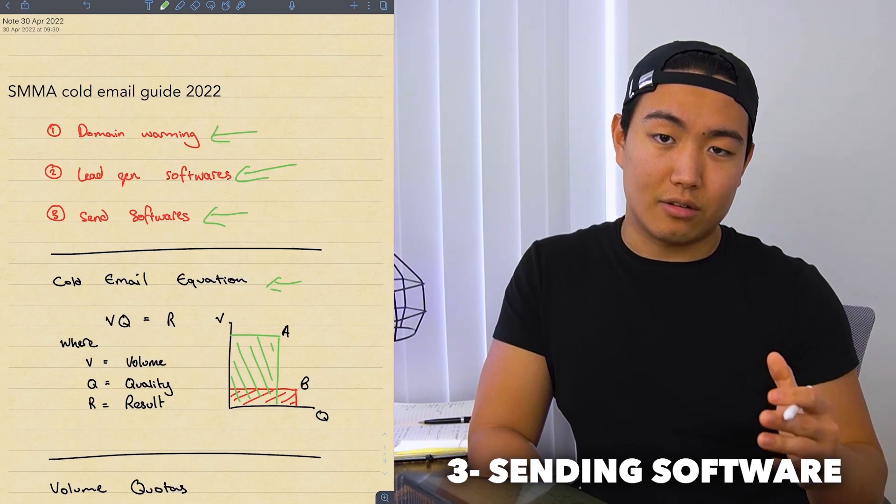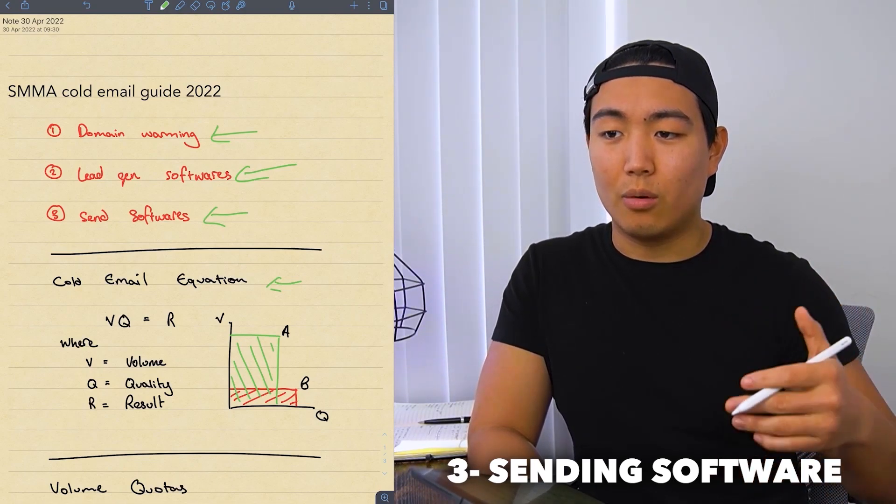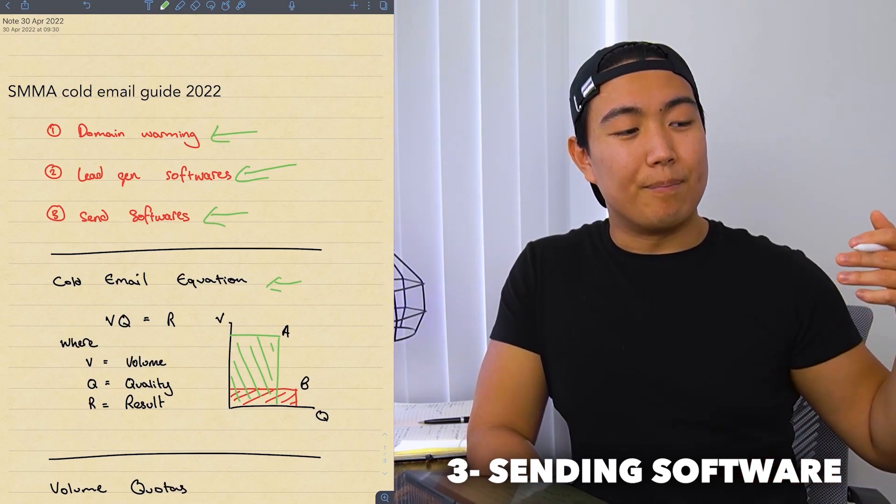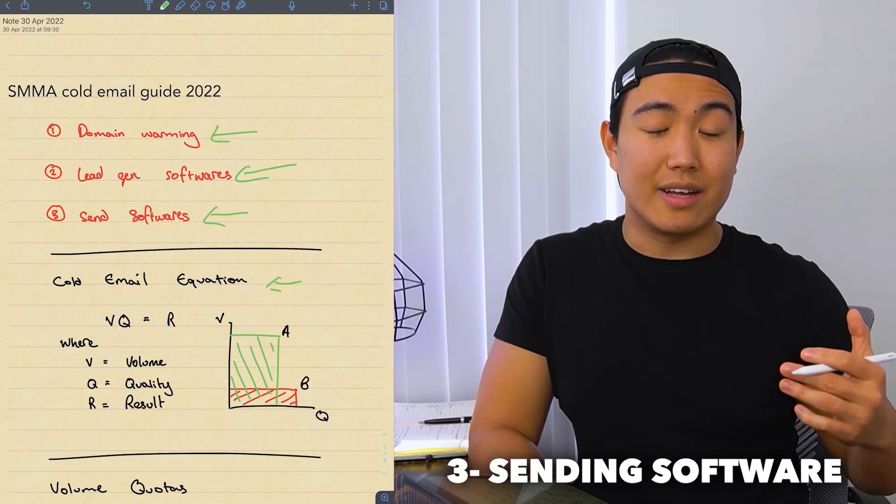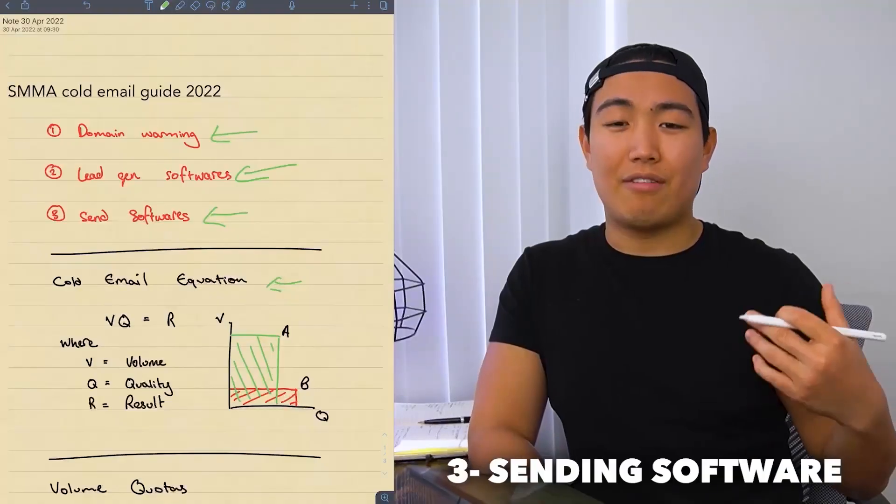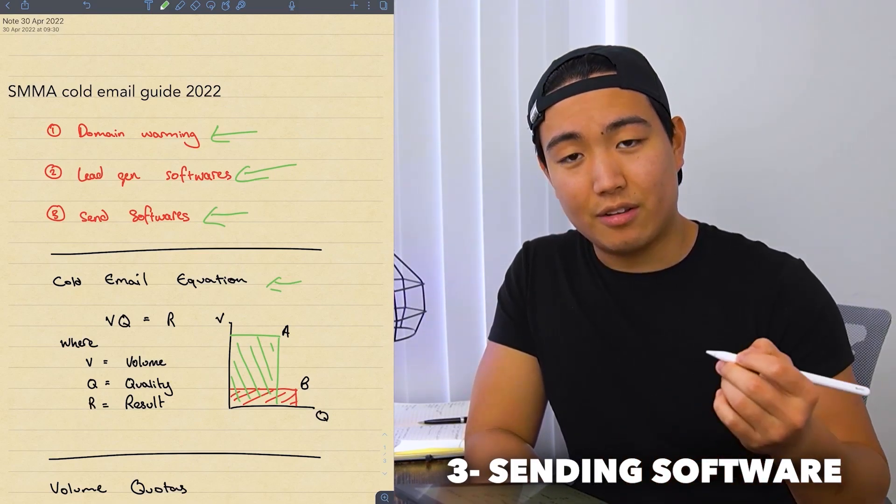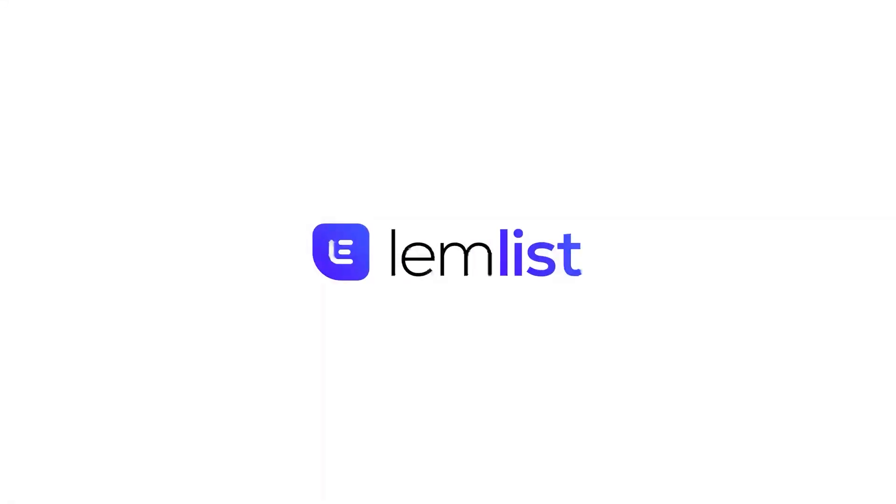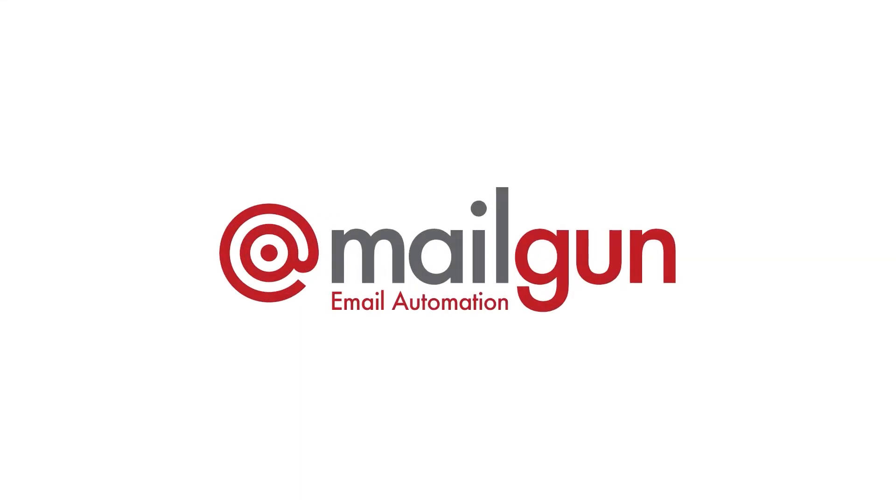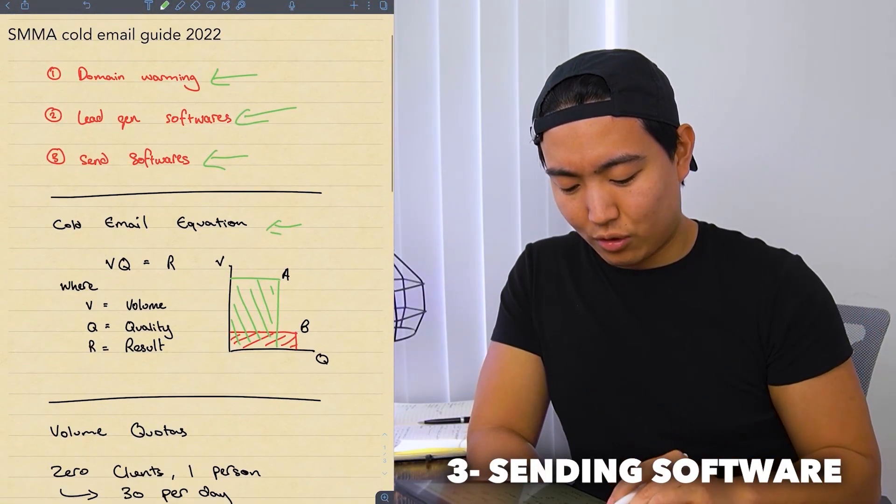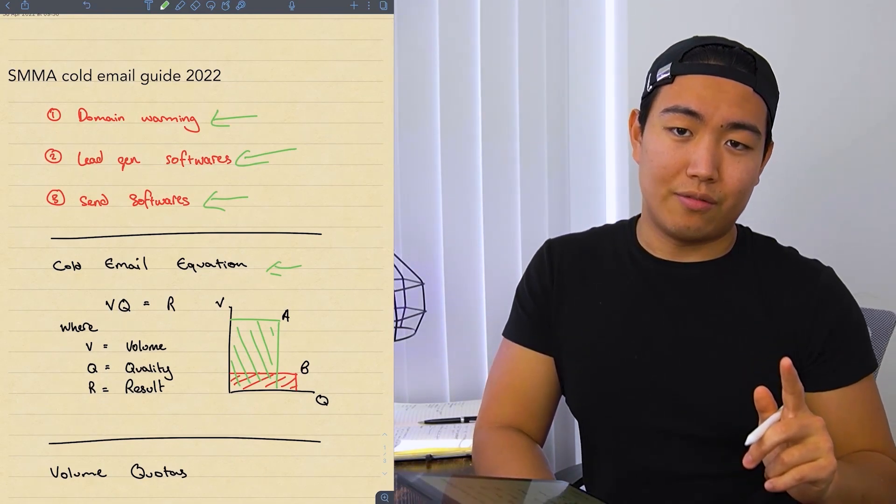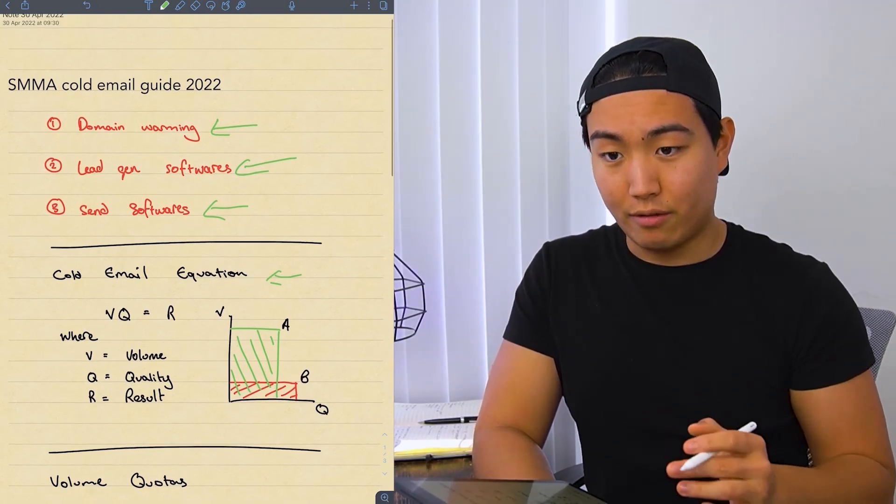Next thing you're going to need is sending software. So this would be something to help you send emails automatically. I know some people advocate sending directly in Gmail manually. However, I find that to be a pretty tedious process and I just don't really like it. I prefer to use things like Lemlist. There's also like Mailgun, I think. But Lemlist is definitely my software choice. Now, let's dive into the real value of this video because that's what you're here for.